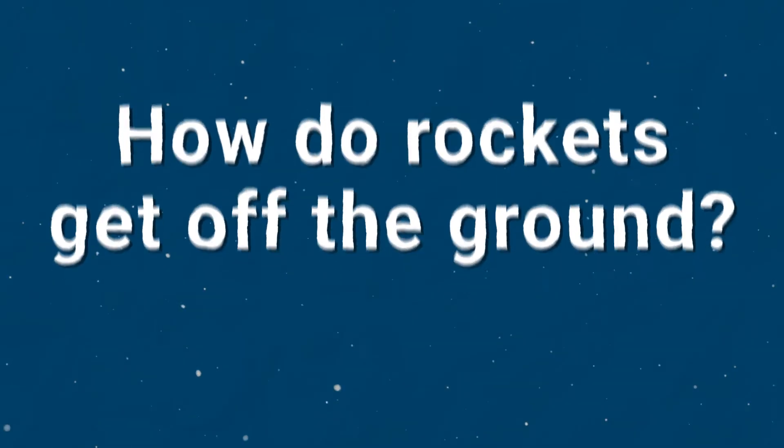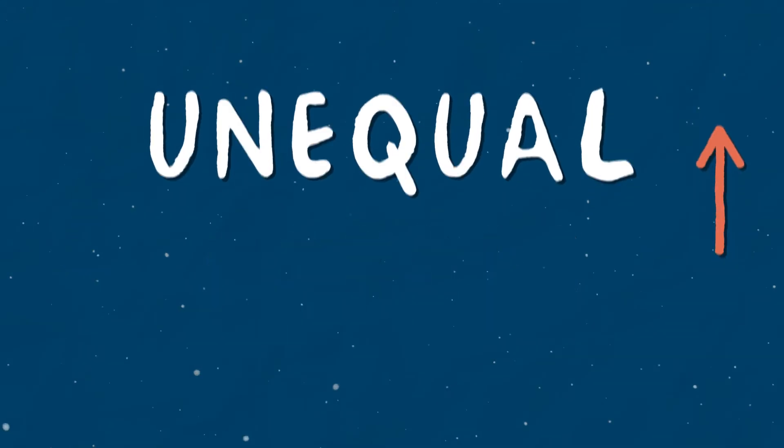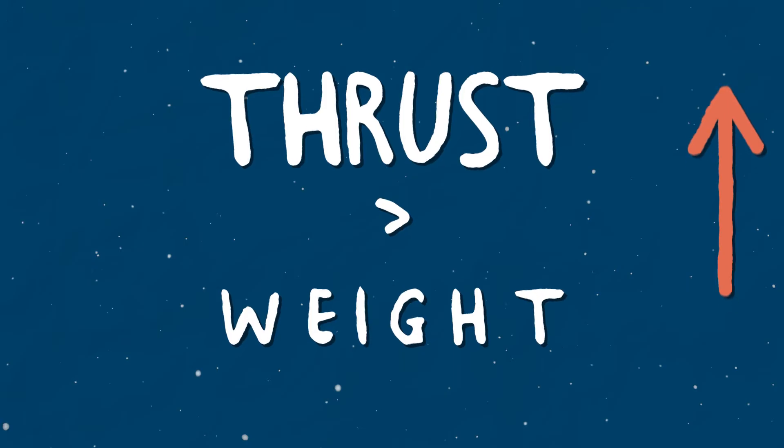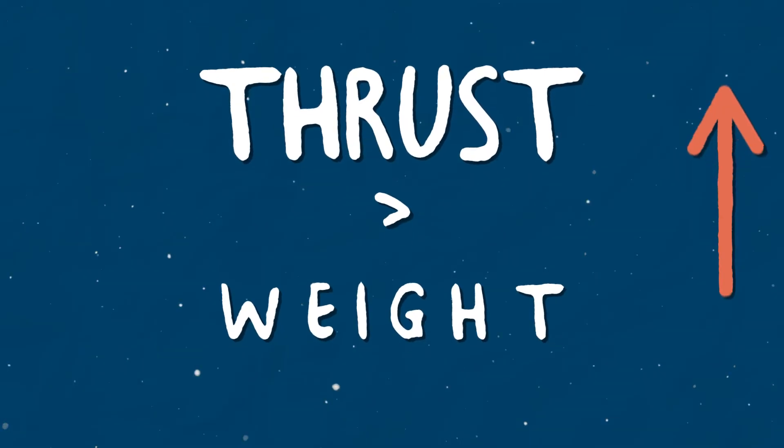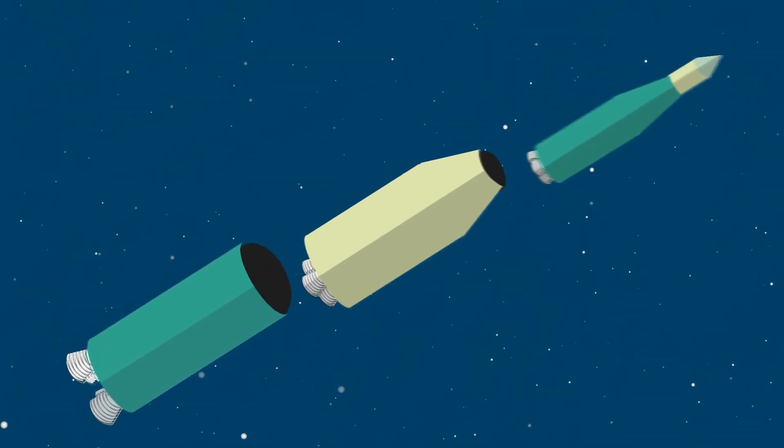First off, the forces acting on the rocket must be unequal. The thrust lifting the rocket must be greater than the weight pulling the rocket down, in order to get anywhere. But how do we generate enough thrust? This is where the propulsion system comes in.